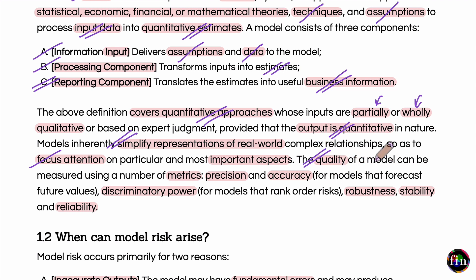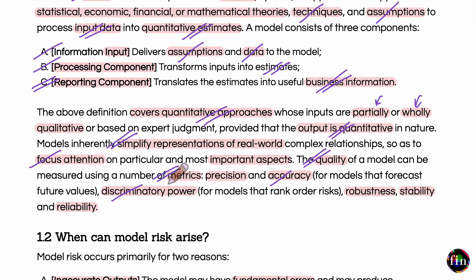The quality of any given model can be assessed along a number of dimensions and metrics. One metric is precision — in a statistical model's context, you can think of precision as standard error. Another metric is the model's accuracy — for a statistical model, you can think of accuracy as its biasedness, meaning how close are the model's estimates to the true actual value. Then, other dimensions and metrics include discriminatory power, which would be important for a credit scoring model — can this model efficiently and effectively discriminate between defaulters and non-defaulters?